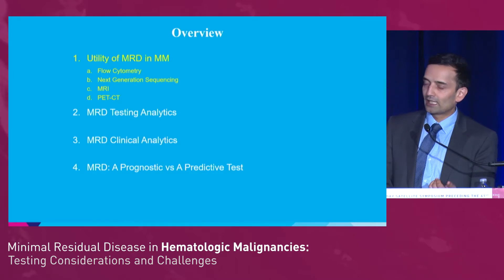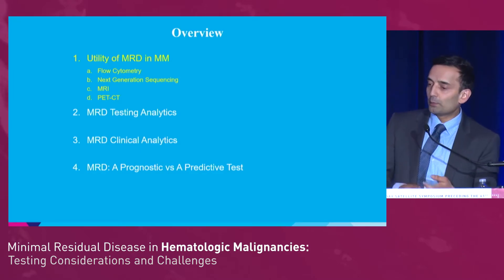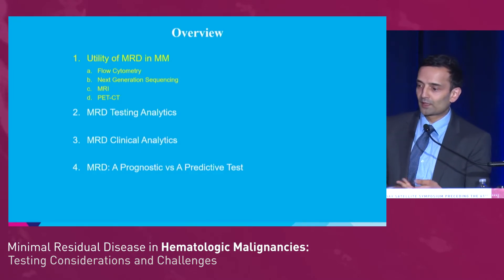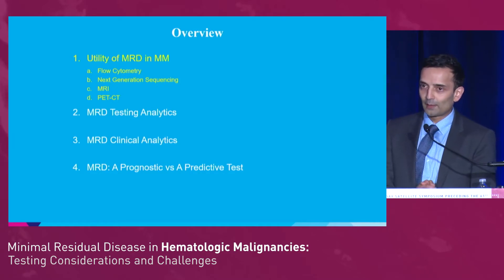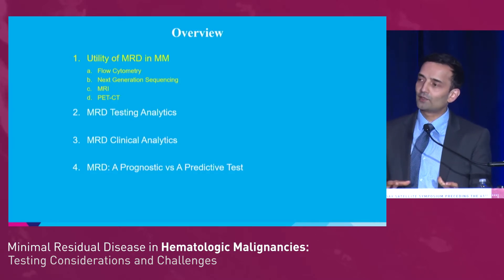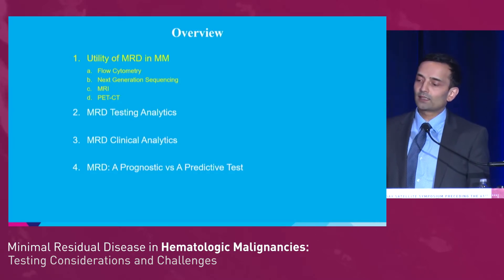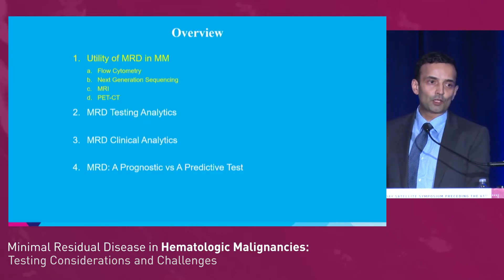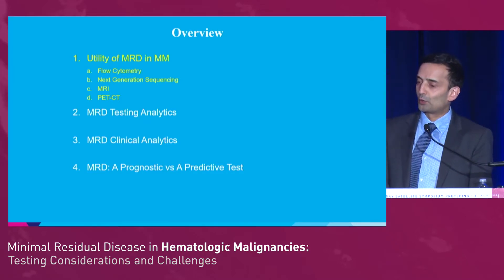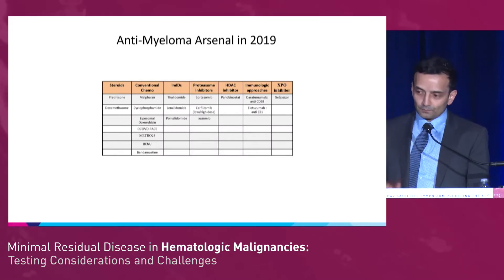We have SPEP, IFE, UPEP, urine protein electrophoresis, immunofixation, free light chains, PET scans, MRIs — so we have a lot of tests. And the question we always ask our house staff and students is: if you're going to order a test, how will it change your management? So let's see what the data show.